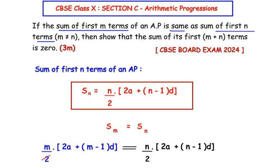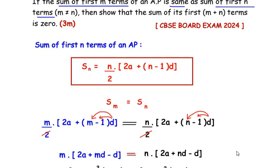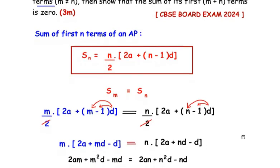The 2 from the denominator on the left hand side cancels with the 2 from the denominator on the right hand side. On the left hand side we have m times 2A plus, expanding the brackets, D times m giving us mD and D times negative 1 giving us minus D. This equals, on the right hand side, n times 2A plus nD minus D. Next, multiplying through: the left hand side gives 2Am plus m squared D minus mD, and the right hand side gives 2An plus n squared D minus nD.